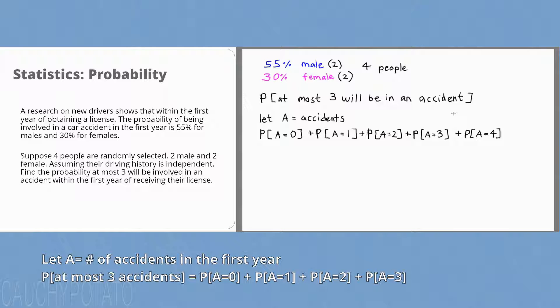Since we're adding the probabilities of every possible event, the event we are interested in is at most three accidents. Each of these events are mutually exclusive from each other, i.e. the outcome at the end of the year can either be zero, one, two or three accidents.